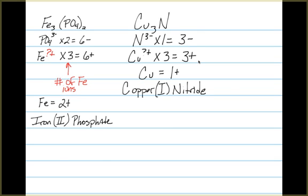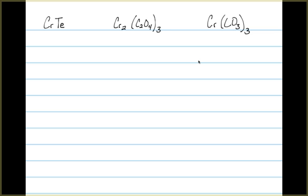The name for our compound then is copper 1 nitride. The next three examples here illustrate why we need to have this.